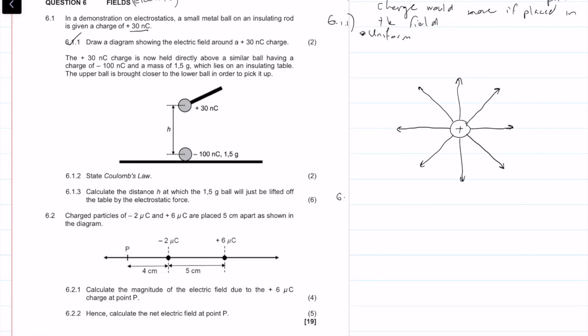Question 6.1.2 is a definition. This is a long definition and my handwriting is really ugly, so I think you guys would prefer if I just say it out loud. What is Coulomb's Law? Coulomb's Law states that two point charges in free space or air exert forces on each other. The force is directly proportional to the product of the charges and inversely proportional to the square of the distance between the charges.